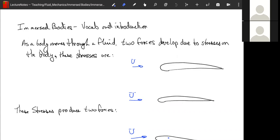Okay, so we're going to start a new section, and this is related to flow through pipes, but we're going to invert it. We're going to have flow around objects, right?